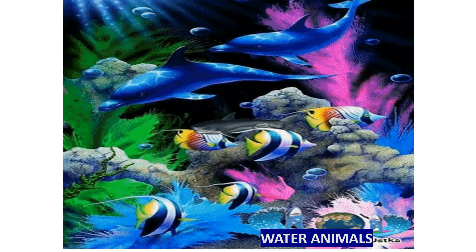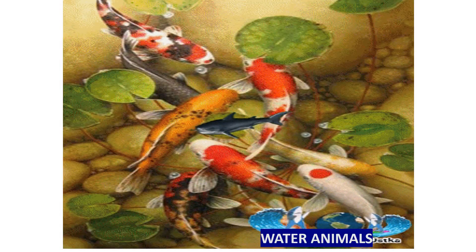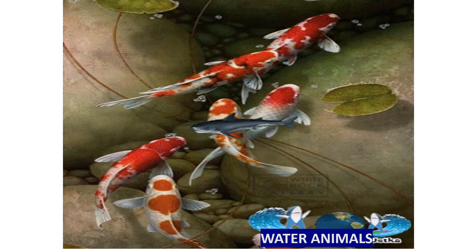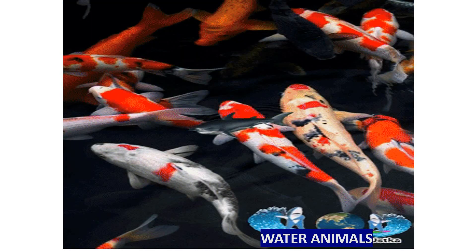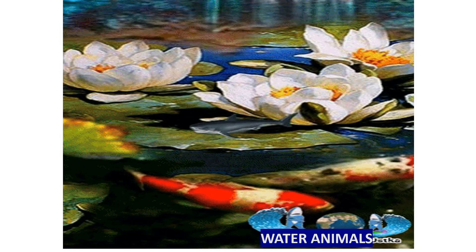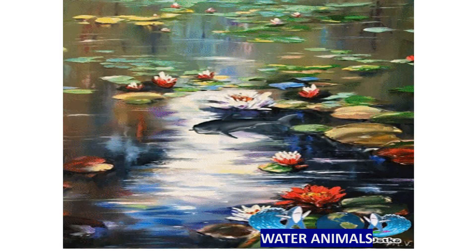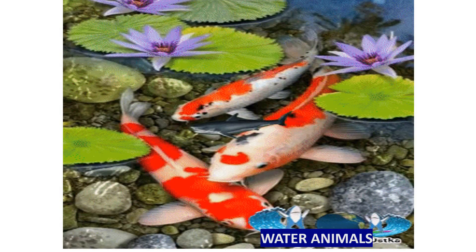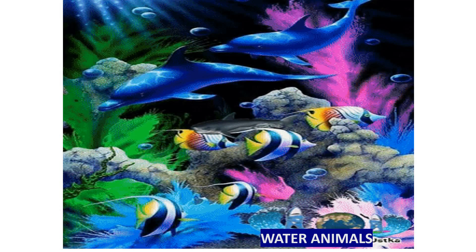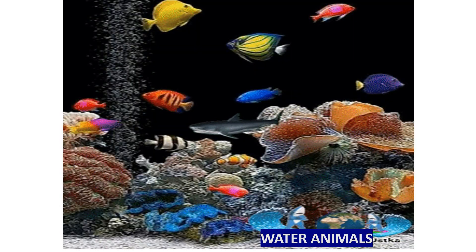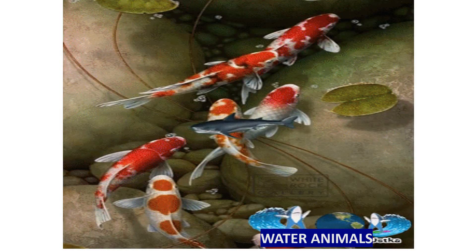Some examples of water animals are dolphin, whale, starfish, octopus, etc. As you can see in this slide, there are many water animals. Aap ismein kis kis ko identify kar sakte ho? Can you tell some names?